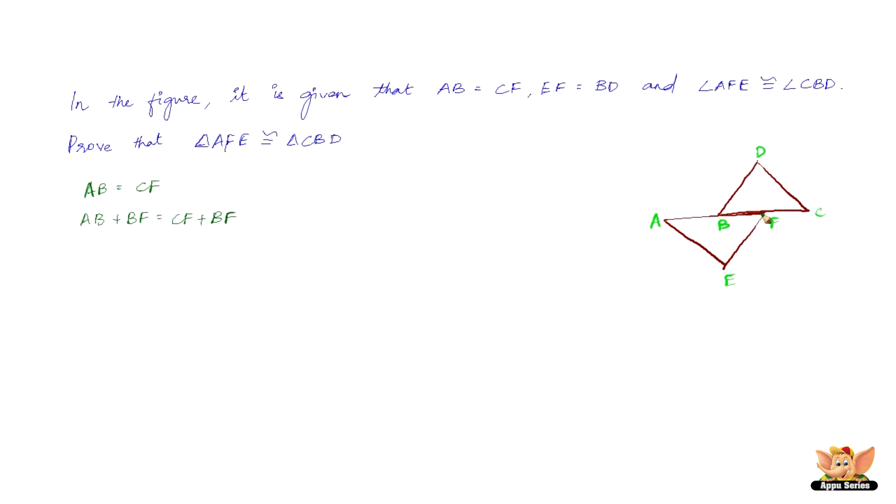Therefore, AB plus BF is nothing but AF and CF plus BF is nothing but CB.